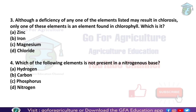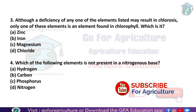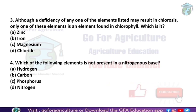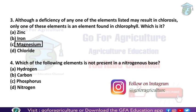Next question: although a deficiency of any one of the listed elements may result in chlorosis, only one of these elements is found in chlorophyll. The answer is magnesium, because magnesium is the main element in chlorophyll.